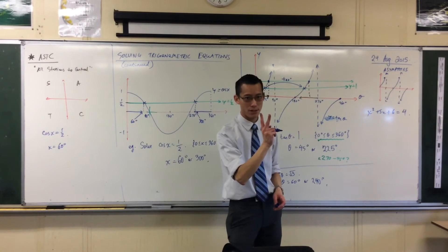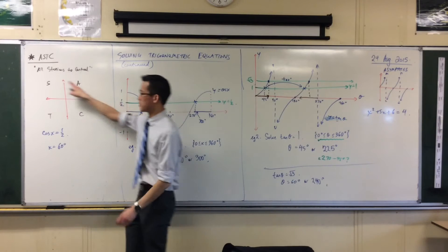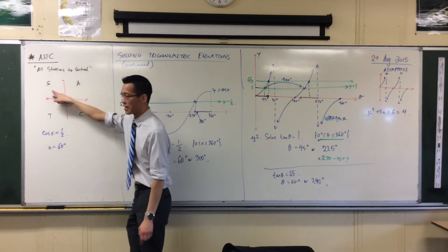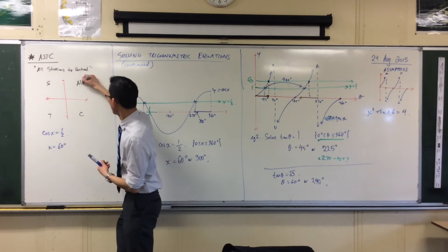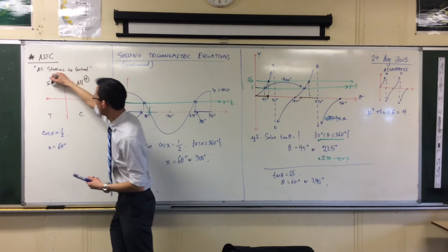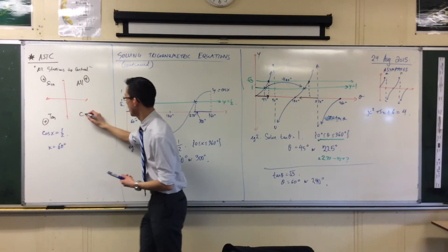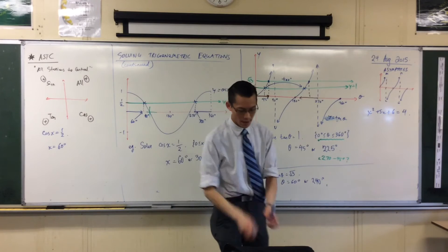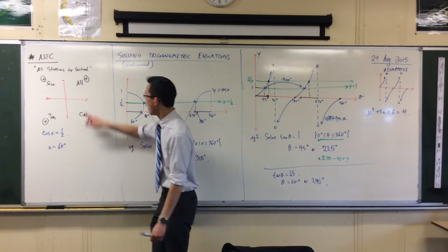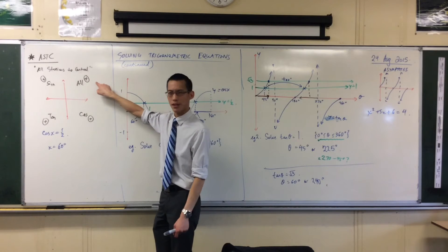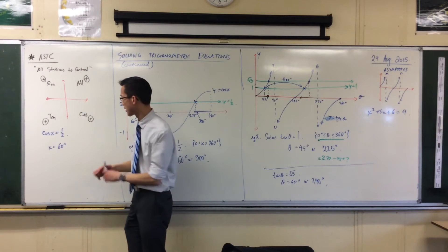Now to get the second solution, instead of appealing to a graph, I appeal to this guy. All stations to central—that's all are positive in this quadrant, sine is positive in this quadrant, tan is positive in this quadrant, and cos is positive in this quadrant. So you can see I have a positive value here. I've already got my first quadrant angle from 0 to 90. There he is right there. The calculator will always hand that one to you.